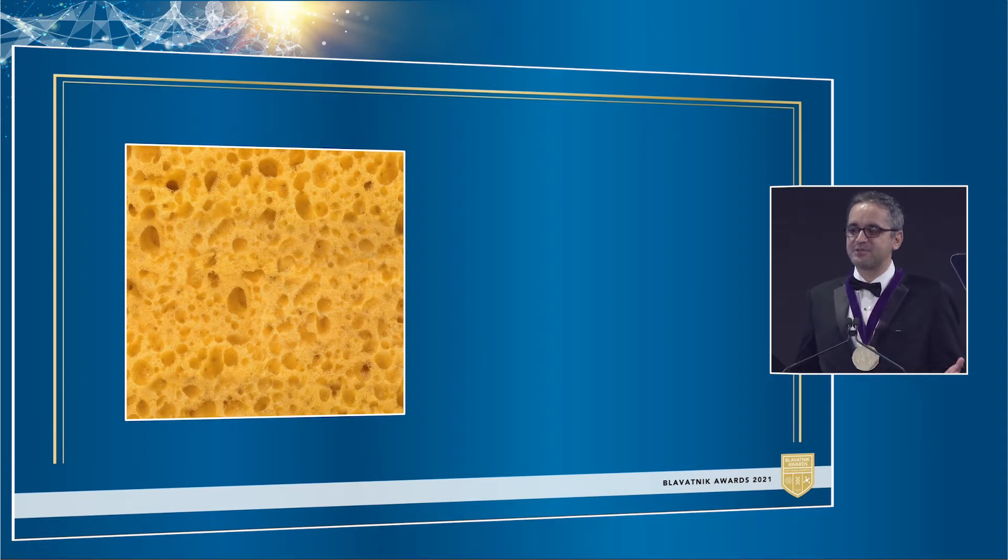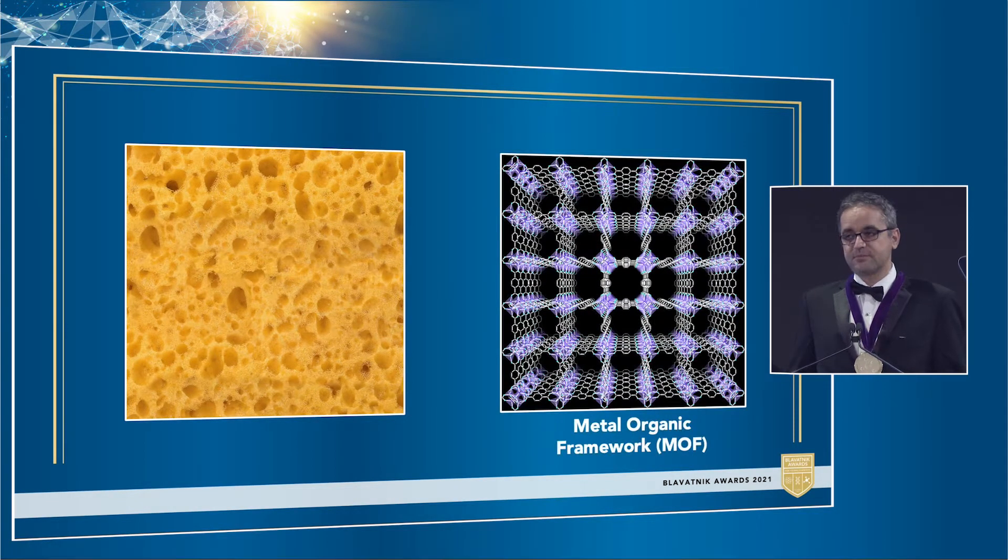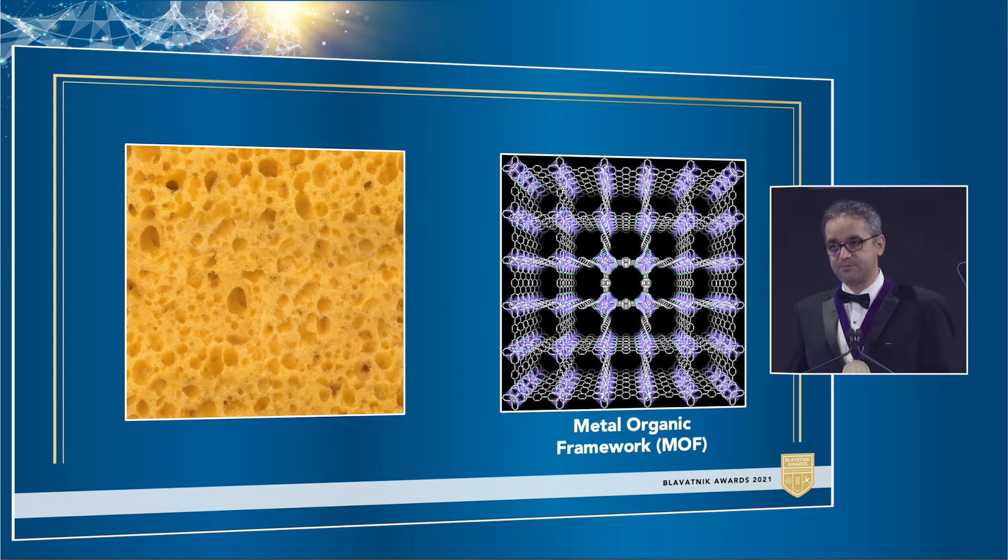So first let's imagine what a sponge looks like. They're made up of some soft materials and interspersed with all of these little pores. Metal organic frameworks or MOFs have essentially the same structure but much much smaller. They have pores just like sponges but the pores in MOFs are absolutely tiny compared to regular sponges.